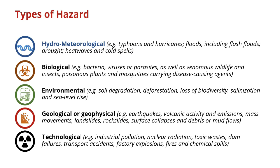When we talk about the different types of hazards, you have hydrometeorological hazards such as typhoons, hurricanes, cyclones, and floods. Then you have biological hazards such as bacteria, viruses, or parasites. Then environmental hazards such as soil degradation, deforestation, and loss of biodiversity. Then geological or geophysical hazards such as earthquakes, volcanic activity, and landslides. And then technological hazards, which include industrial pollution, nuclear radiation, or toxic waste.